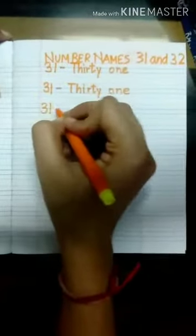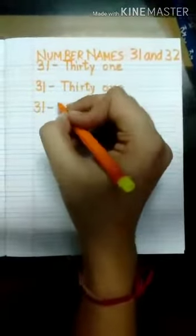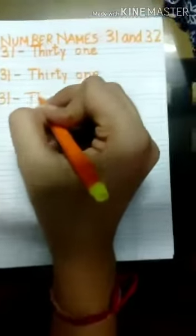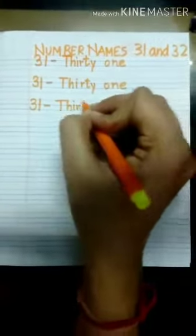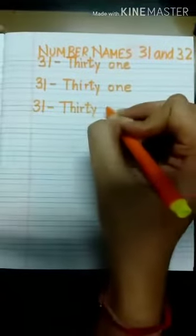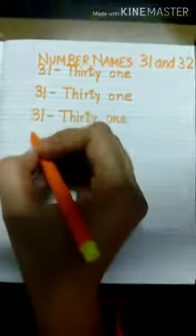3, 1 — a small dash — t, h, i, r, t, y: thirty, o, n, e: 1. Thirty-one, 31.